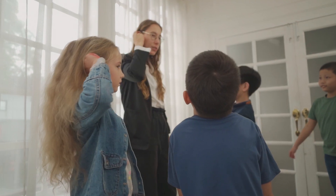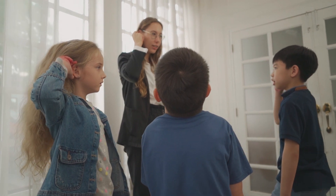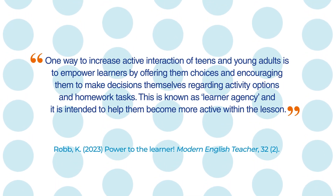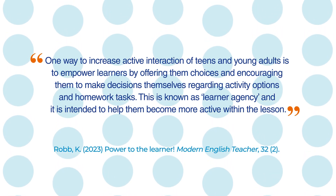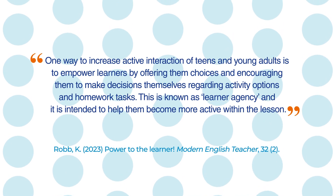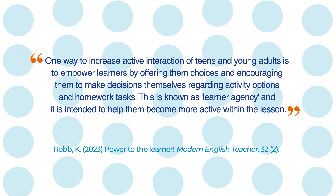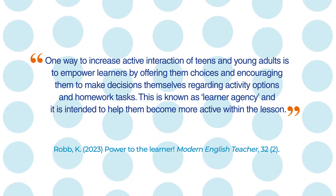Some groups might want to explore new genres, some may want to focus on the lyrics of songs they are familiar with. Allowing students to choose the song, the artist, or the type of activity can be a good way to ensure that all students are on board. According to Cat Robb, in a fascinating article in the latest edition of Modern English Teacher called 'Power to the Learner,' one way to increase active interaction of teens and young adults is to empower learners by offering them choices and encouraging them to make decisions themselves regarding activity options and homework tasks. This is known as learner agency. Mind you, getting a larger group to agree on something can be tricky, but you can get a similar amount of buy-in if you maintain the power to choose but limit the number of options available.